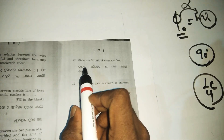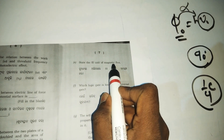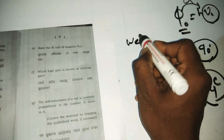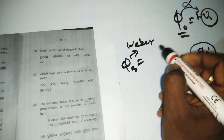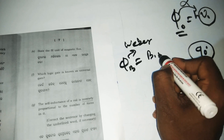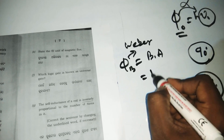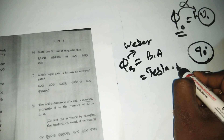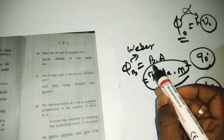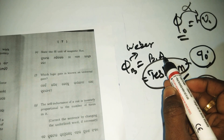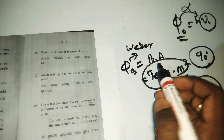The SI unit of magnetic flux: magnetic flux phi equals B into A — that is tesla times area in meter squared. The dot product of magnetic field intensity and area vector gives the magnetic flux. The SI unit is Weber (Wb).